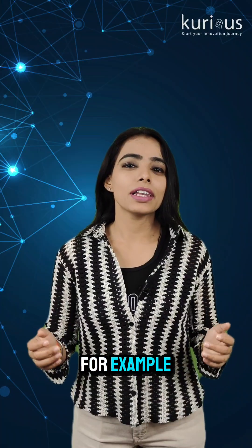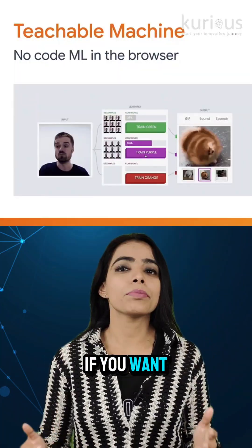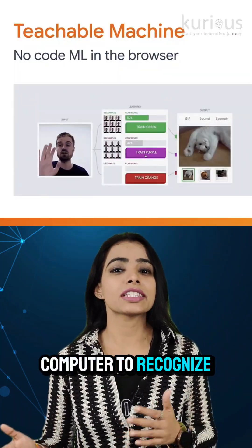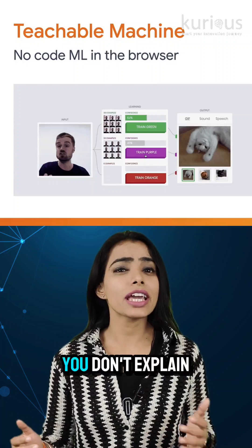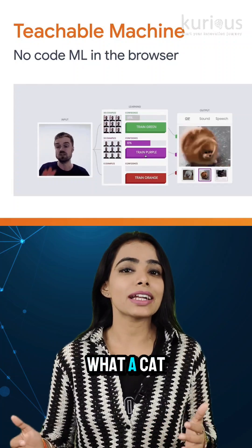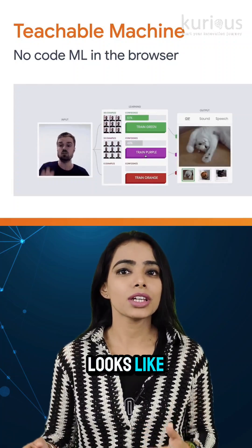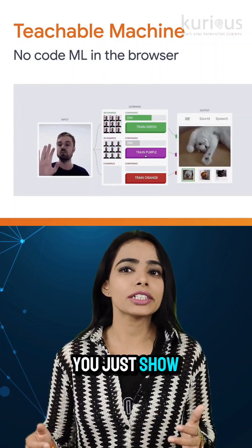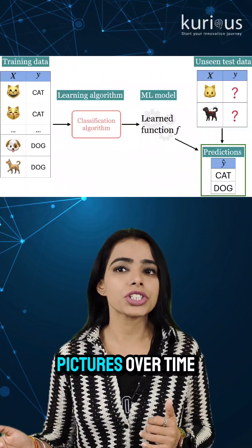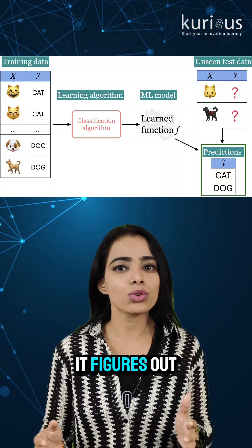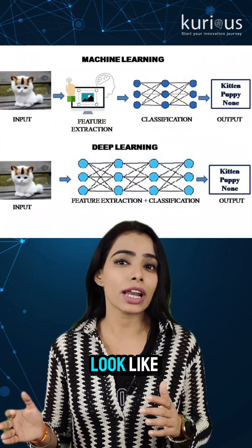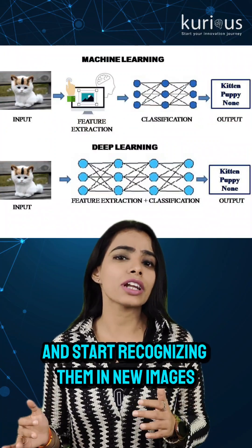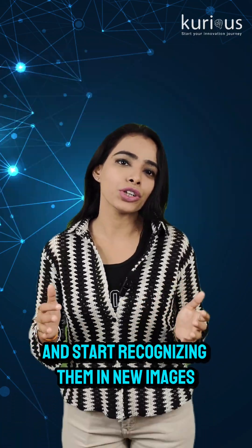For example, if you want a computer to recognize cats in photos, you don't explain what a cat looks like. You just show it thousands of pictures. Over time, it figures out what cats usually look like and starts recognizing them in new images.